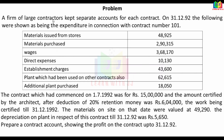A firm of large contractors kept separate accounts for each contract. On 31-12-92, the following expenditures were shown for Contract Number 101: Material issued from stores Rs 48,925; Material purchased Rs 2,90,315; Wages Rs 3,68,170; Direct expenses Rs 10,130; Establishment charges Rs 43,600; Plant used on other contracts also Rs 62,615; Additional plant purchased Rs 18,050.